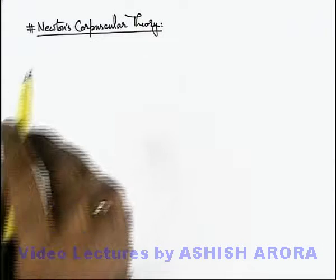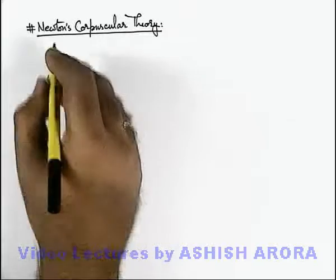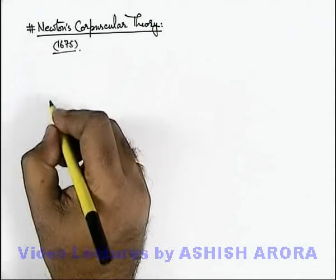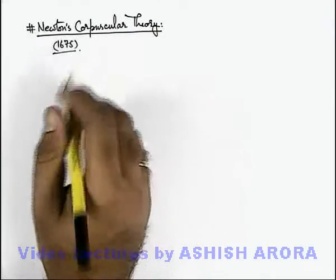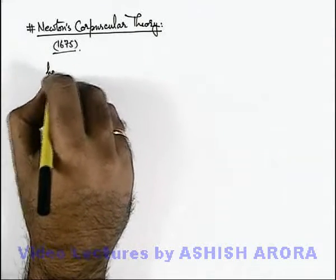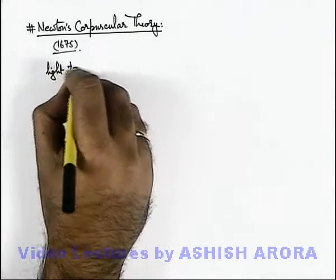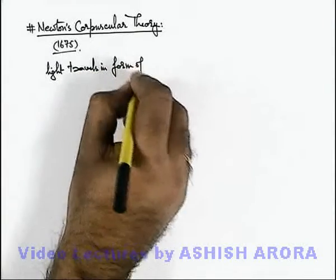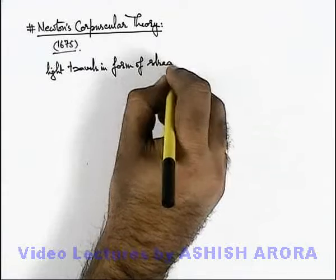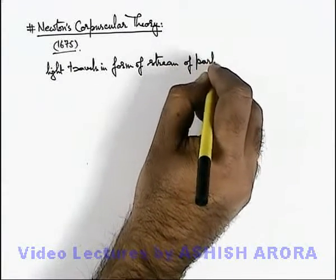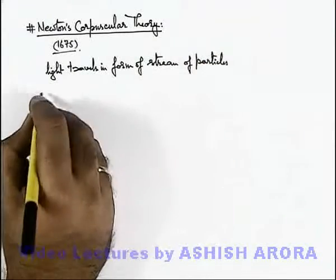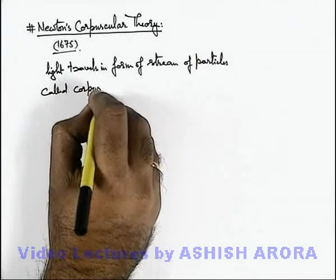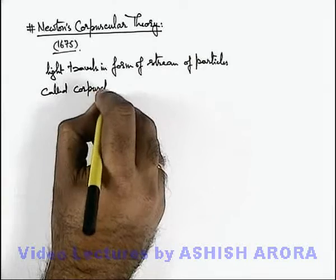Let us now understand Newton's corpuscular theory, which was given by Newton in 1675 for the understanding of light energy. In this theory, Newton said that light travels in the form of a stream of particles called corpuscles.